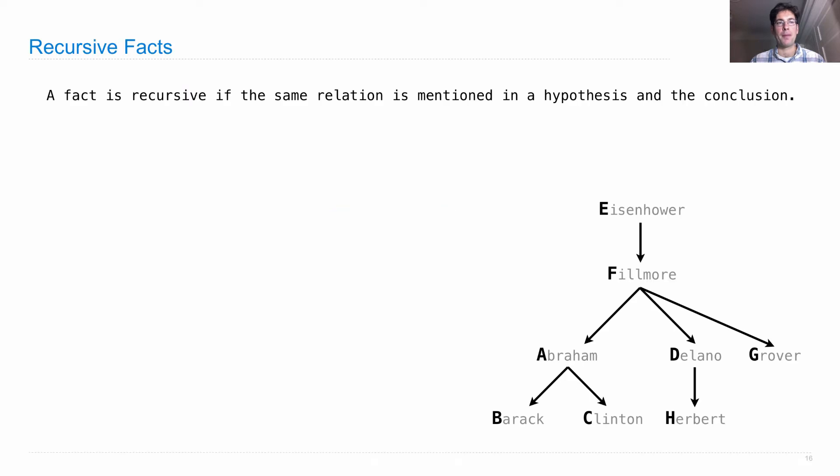Facts can be recursive. A fact is recursive if the same relation is mentioned in the hypothesis and in the conclusion. So we need compound facts in order to do this.